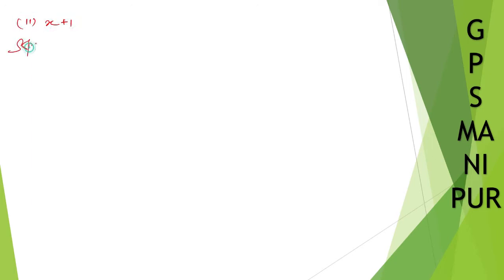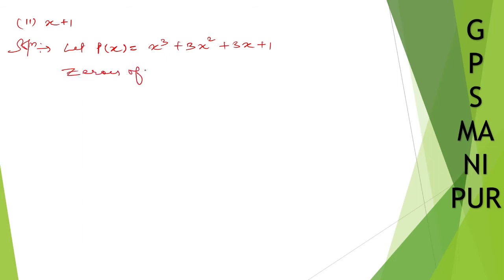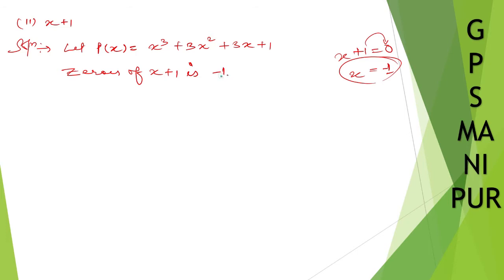Now let us do Roman number 2: the divisor is (x + 1). We have the same p(x) = x³ + 3x² + 3x + 1. For the zeros of (x + 1): set x + 1 = 0, so x = -1.